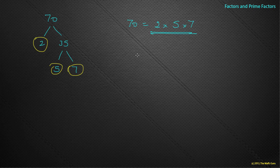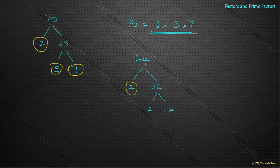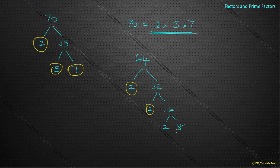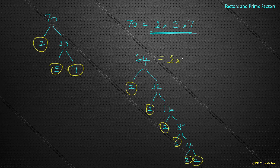Let's do 64. Two goes into 64 thirty-two times — circle the two. 32 divided by two gives 16. 16 divided by two gives eight. Eight divided by two gives four. Four divided by two gives two and two. So 64 is the same as two times two times two times two times two times two times two — that's seven twos all multiplied together.